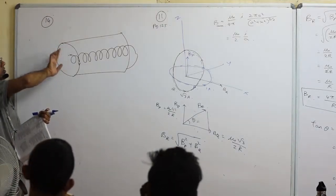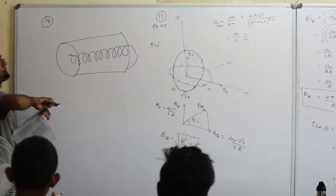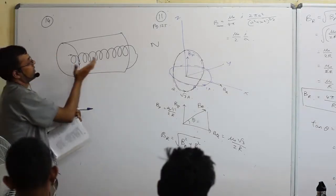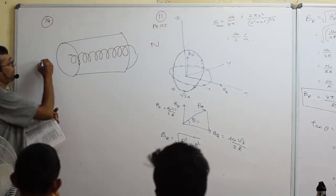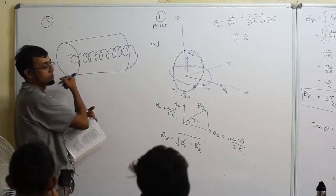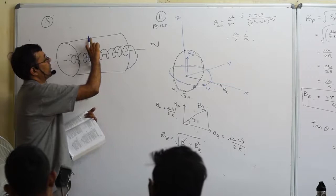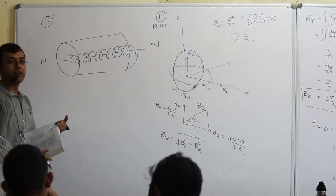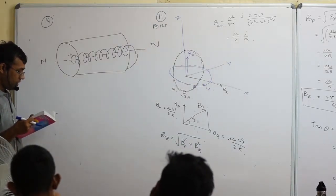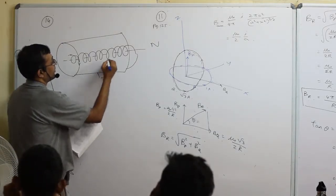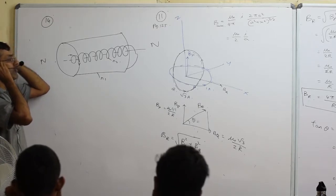Using the right-hand rule (curling fingers): for the outer solenoid the north is on one side, for the inner solenoid it is the other way. So the magnetic fields are opposite and along the same axis. The number of turns per unit length is n1 for the outer and n2 for the inner solenoid.